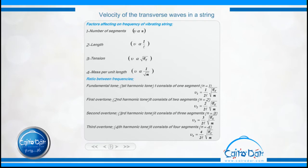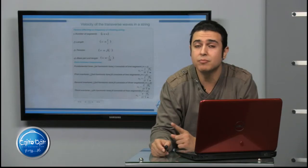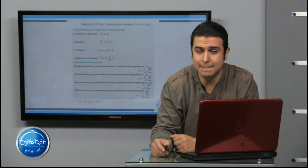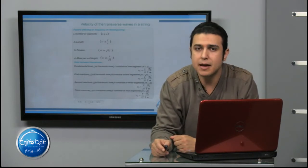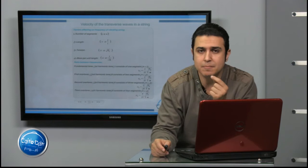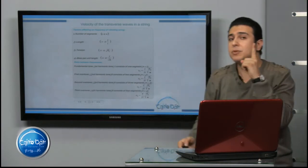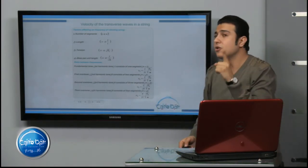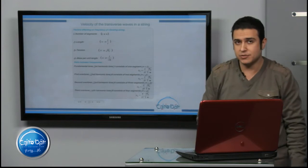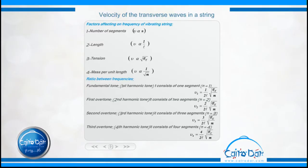Finally, the relation between the frequency and the mass per unit length is inversely proportional under the root, so frequency nu is inversely proportional to the square root of m, where m means mass per unit length — the mass of 1 meter of the string, or mass per unit linear density. So we have four factors: number of segments, length of the string, tension force, and mass per unit length.